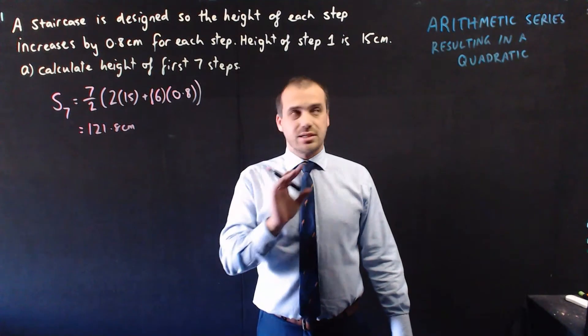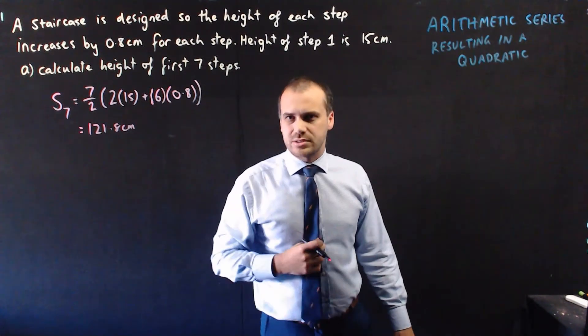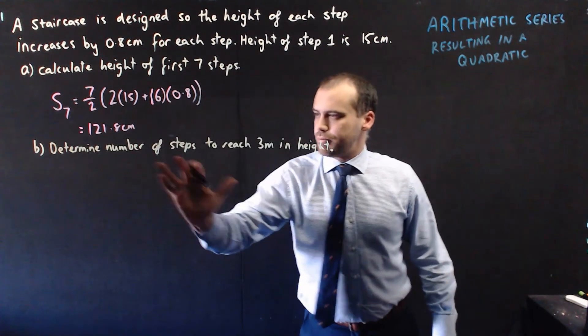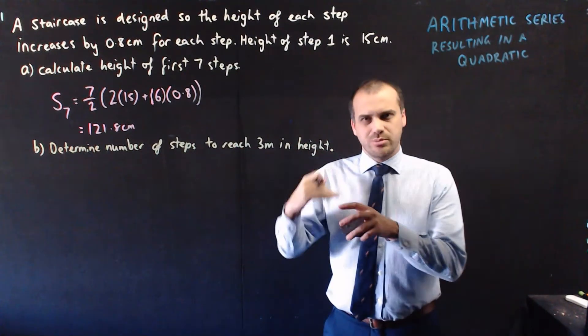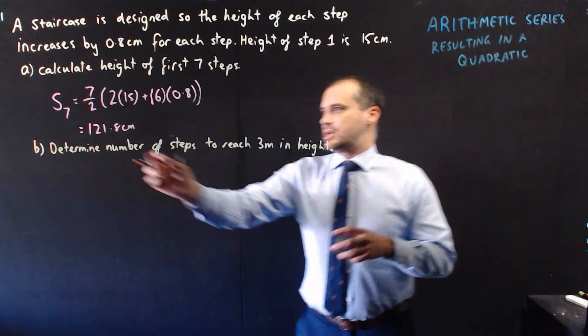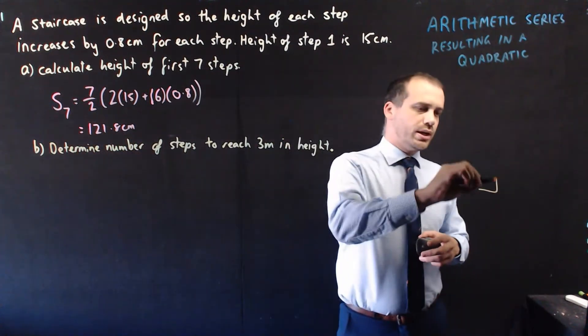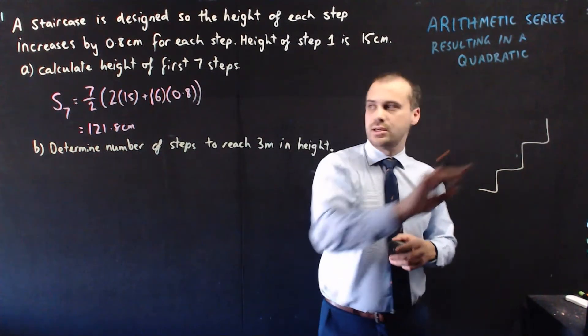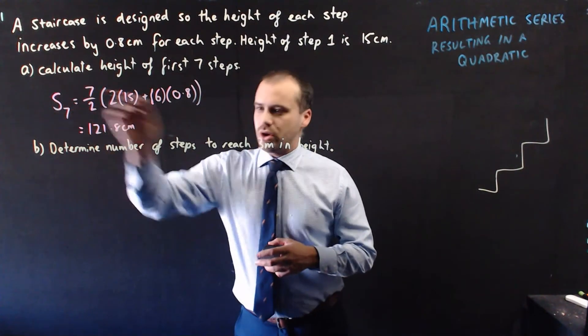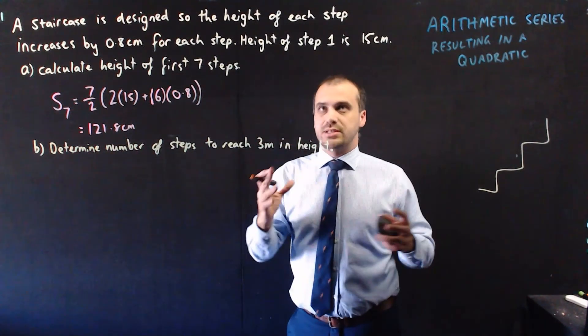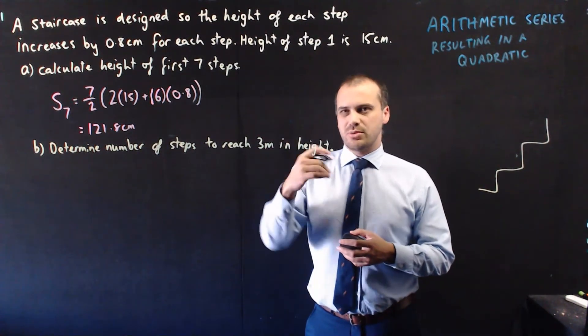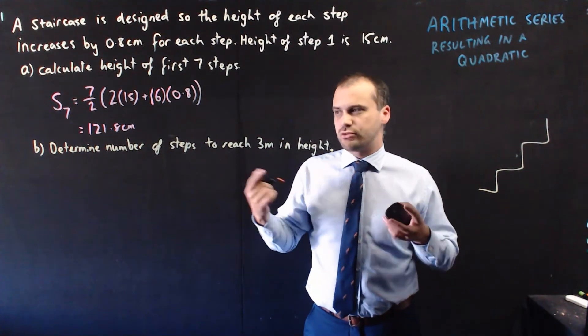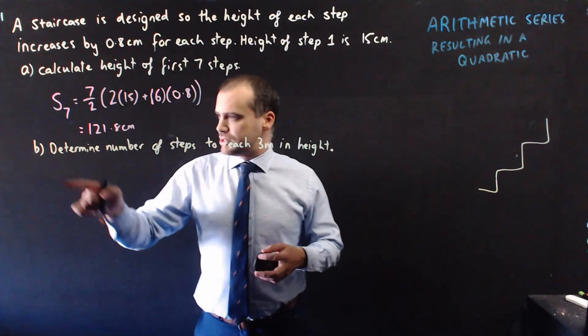Alright, the next question I'm going to ask is where our video really starts. So, we want to determine the number of steps to reach three metres in height. We need to determine an n value to get a total sum, because remember, we're going to add the heights of all of these steps together, a total sum of three metres. First thing to note is, we've been working in centimetres the whole time. So, we don't want three metres, we want 300 centimetres. Let's start working here.